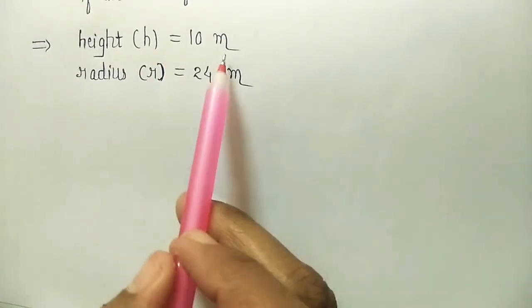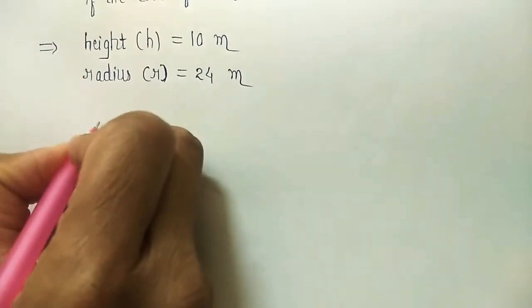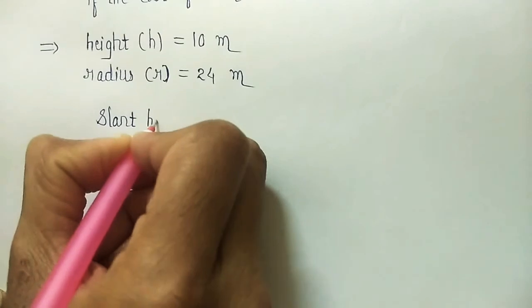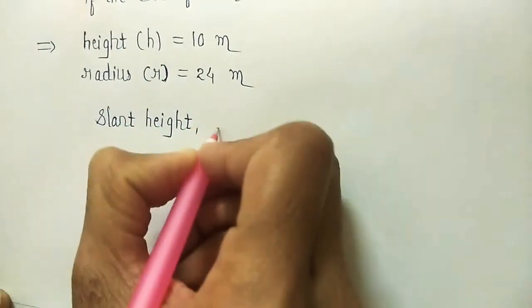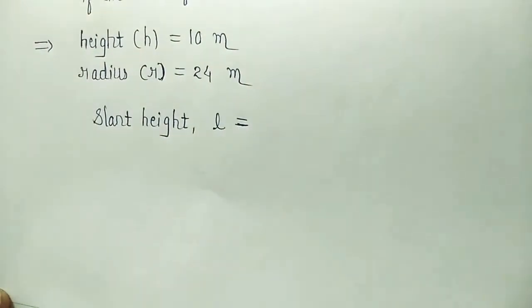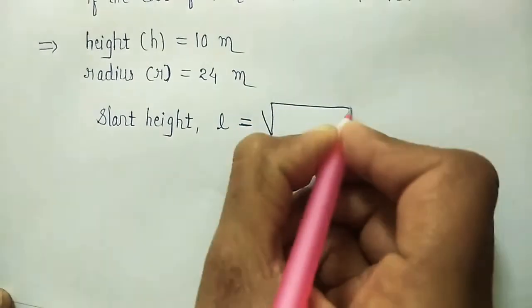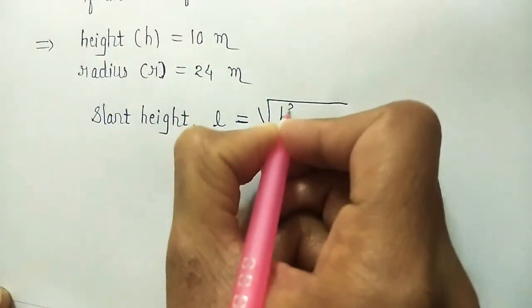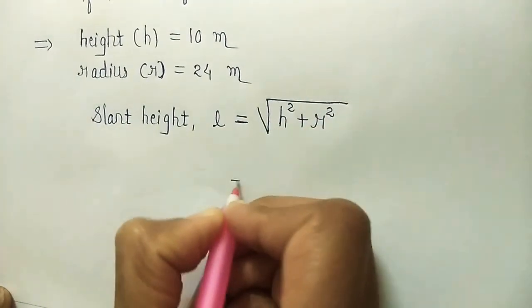Height h is equal to 10 meter. Radius r is equal to 24 meter. So we have to find slant height and the symbol of slant height is what? L. Small l. What is the formula? Slant height is equal to square root of what? H square plus r square. H is height. R is radius.